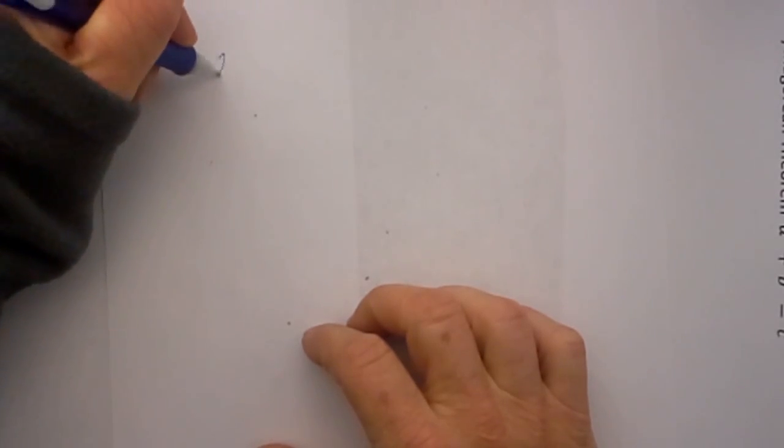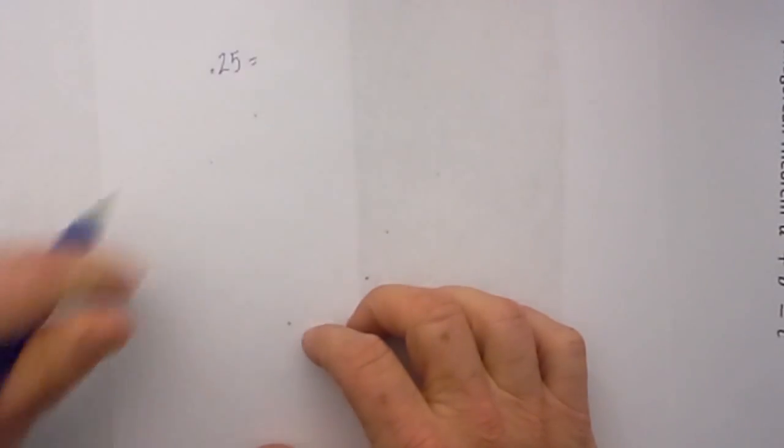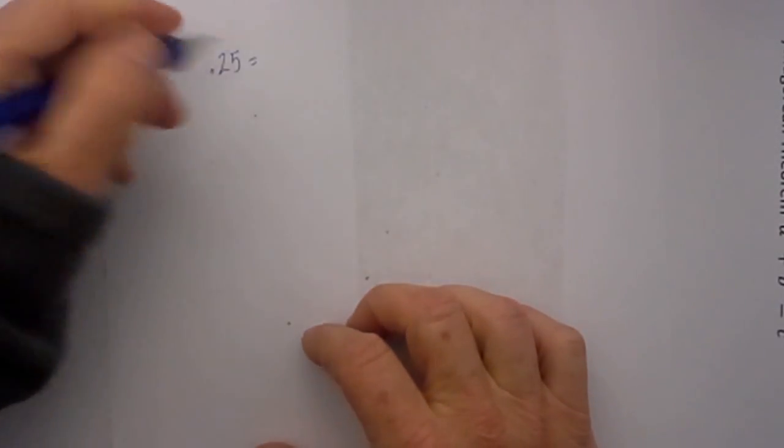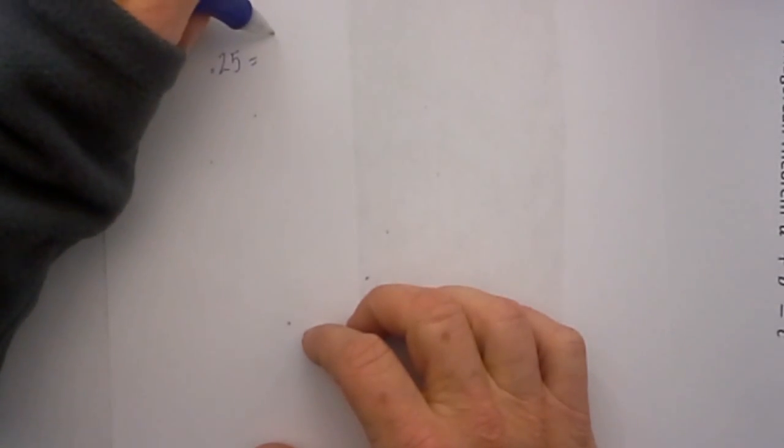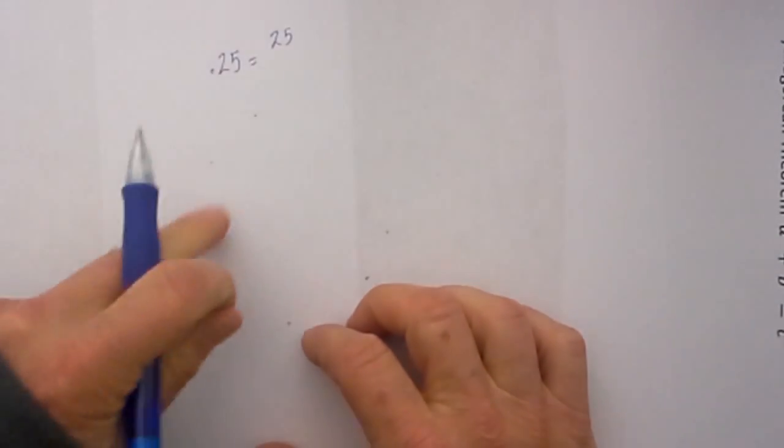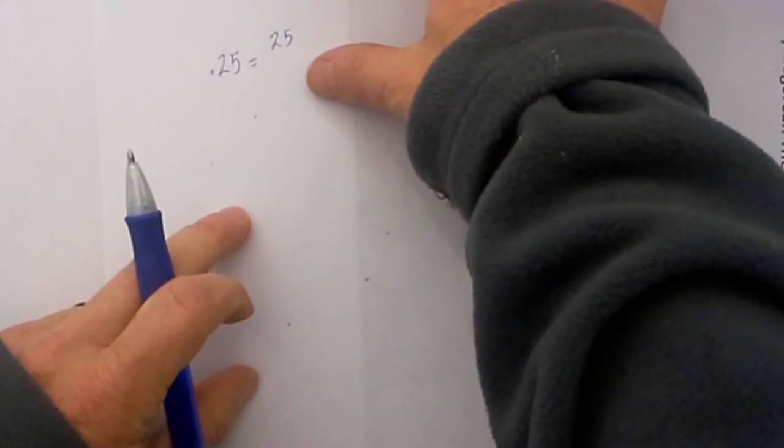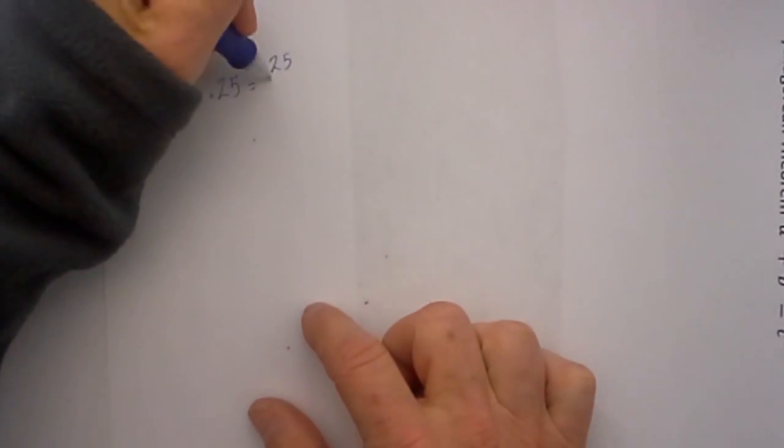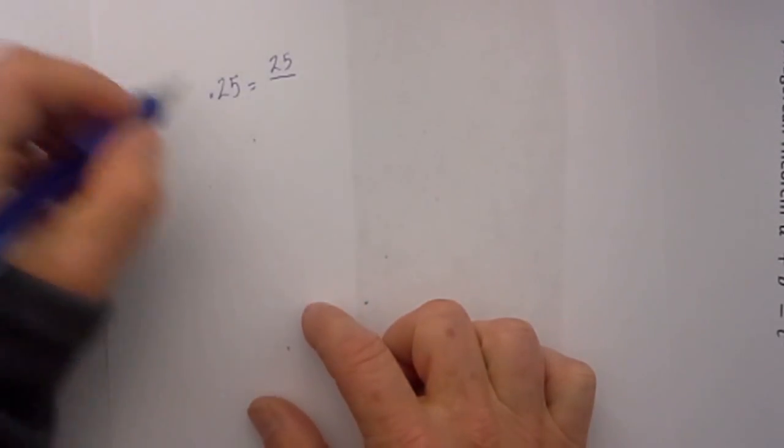Say we have .25 and we want to convert this to a fraction. Well step number one is I will create a fraction and I will convert the .25 into 25 and place it over one, and then I look at the last unit and it is hundredths so I will place it over 100.